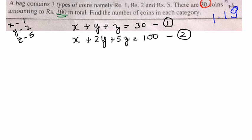Now I have 2 equations, but there are 3 unknowns: x, y, and z. With 3 unknowns and only 2 equations, it is not directly possible to solve. We would need 3 equations to find x, y, z, but we only have two equations from the given question.